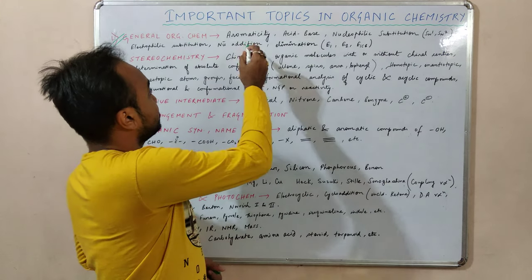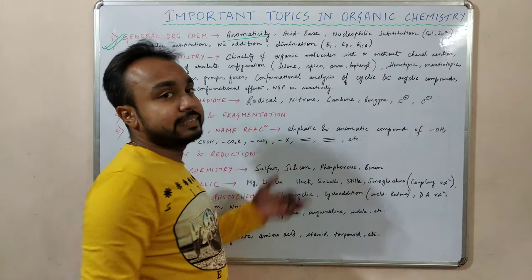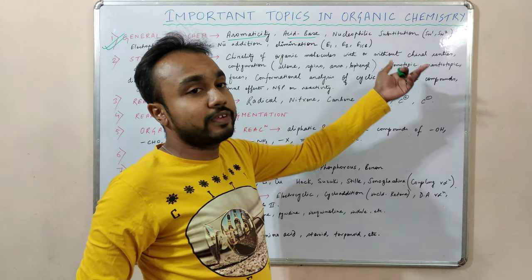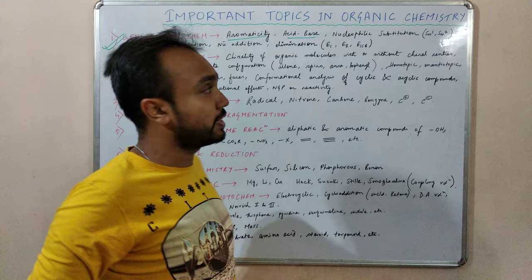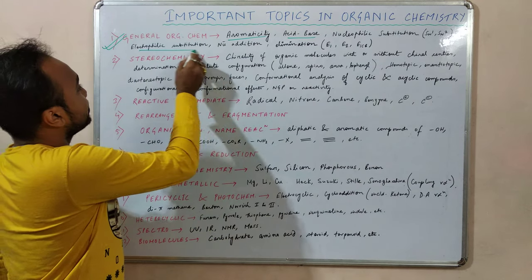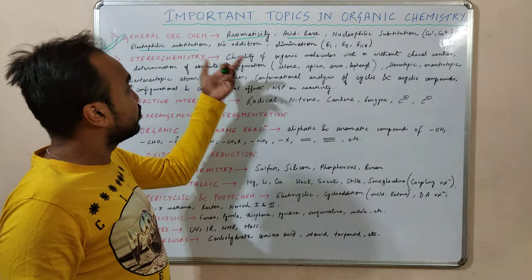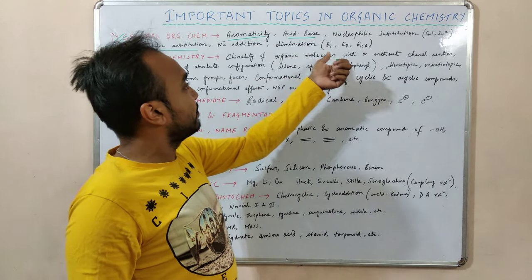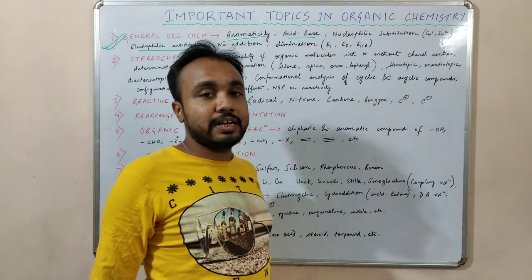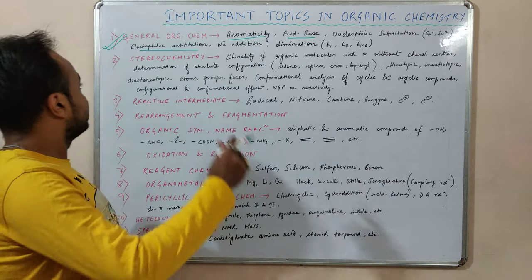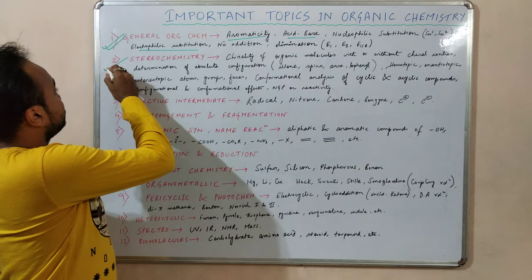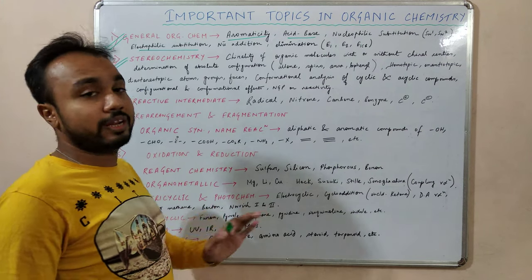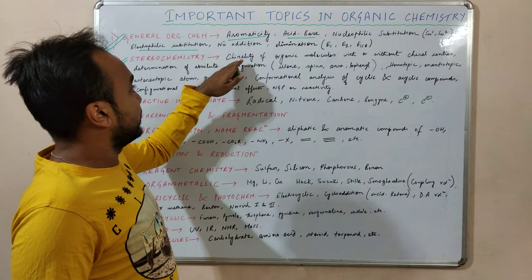General organic chemistry consists of aromaticity and acid-base concepts. Then we will talk about nucleophilic substitution reactions like SN1 and SN2, then electrophilic substitution reactions, then nucleophilic addition to carbonyl compounds, and then elimination reactions like E1, E2, and E1cb.